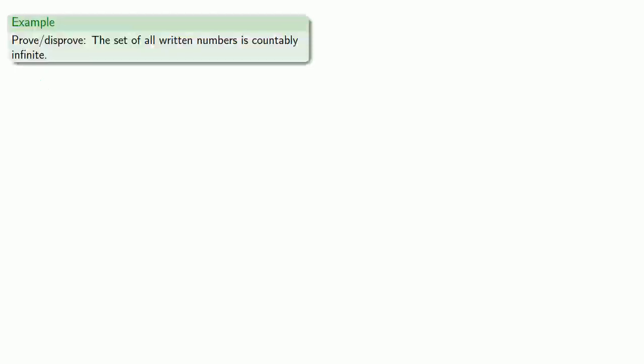These examples should show that showing a set is countably infinite relies on a clever way to list the elements. So let's try one that's a little bit more difficult, but has some very far-reaching consequences. Let's try to find the set of all written numbers and show that it's countably infinite.